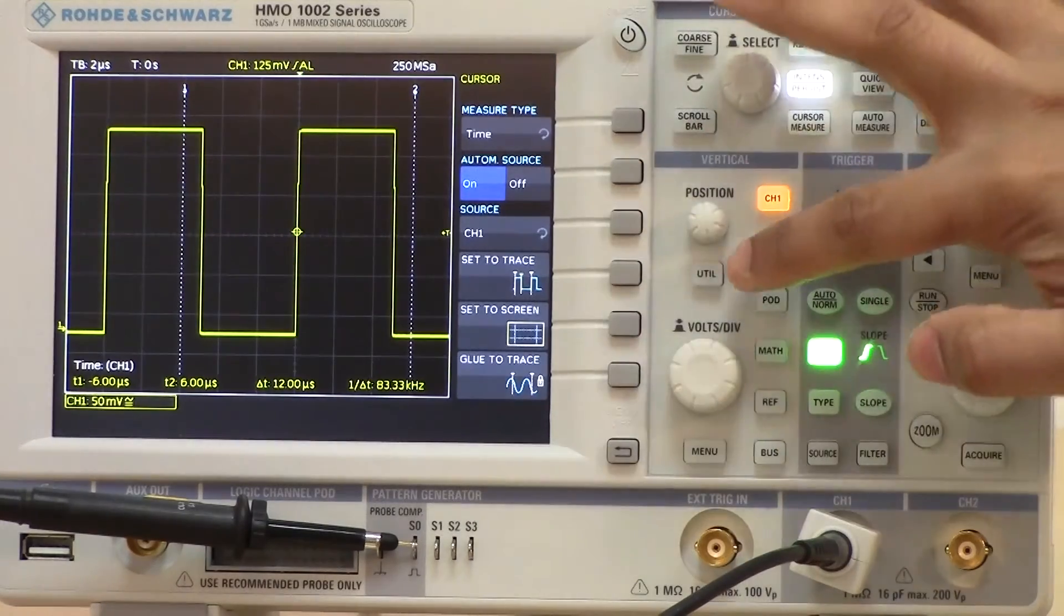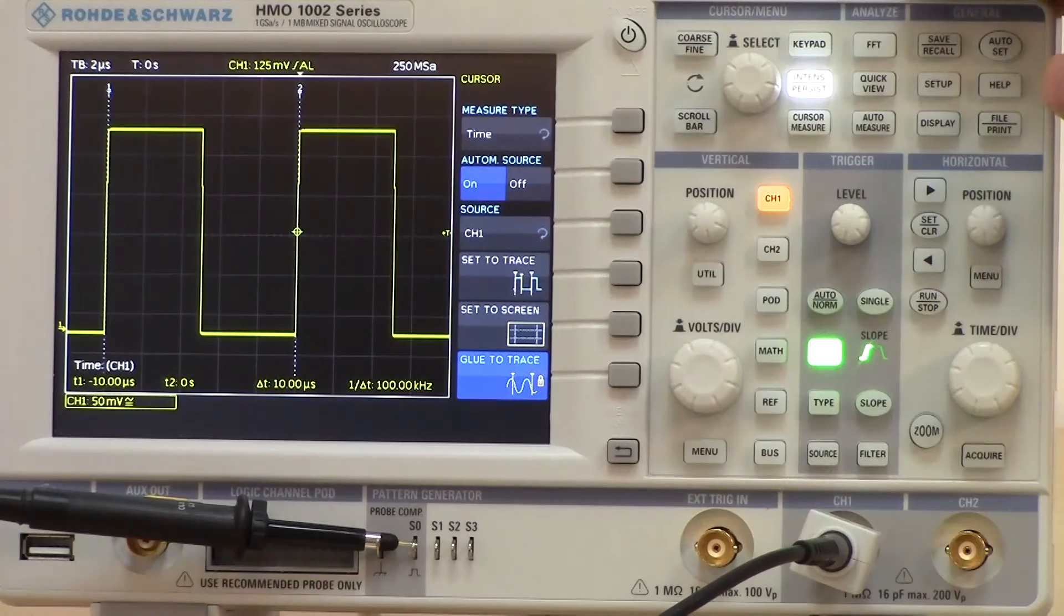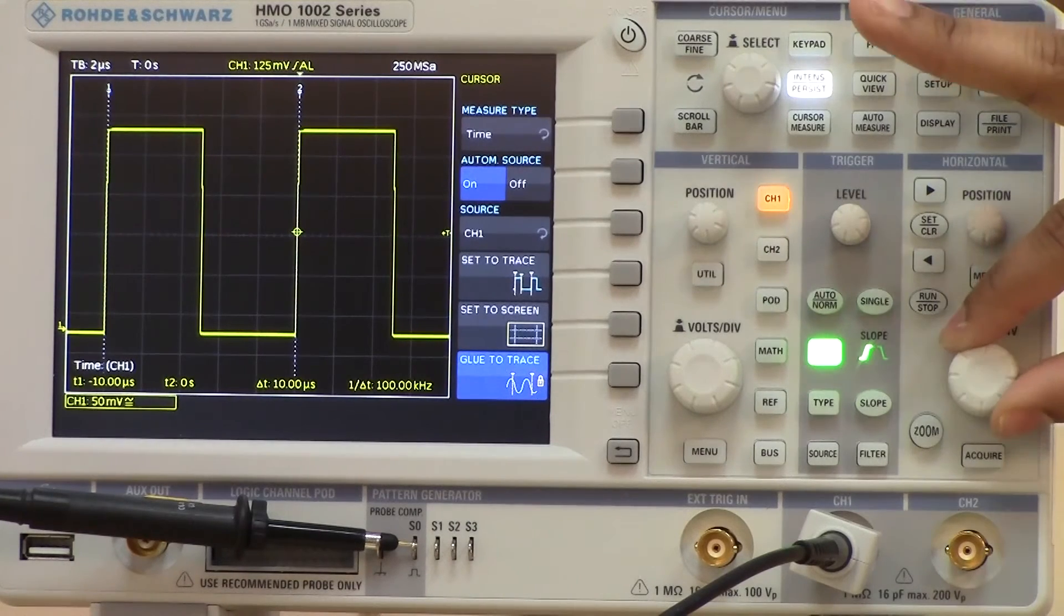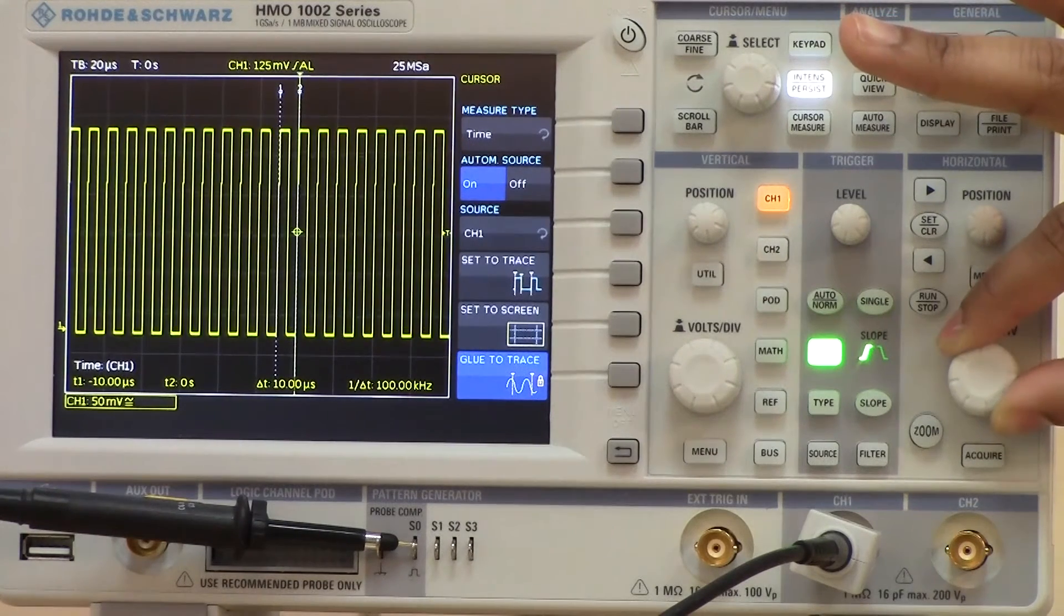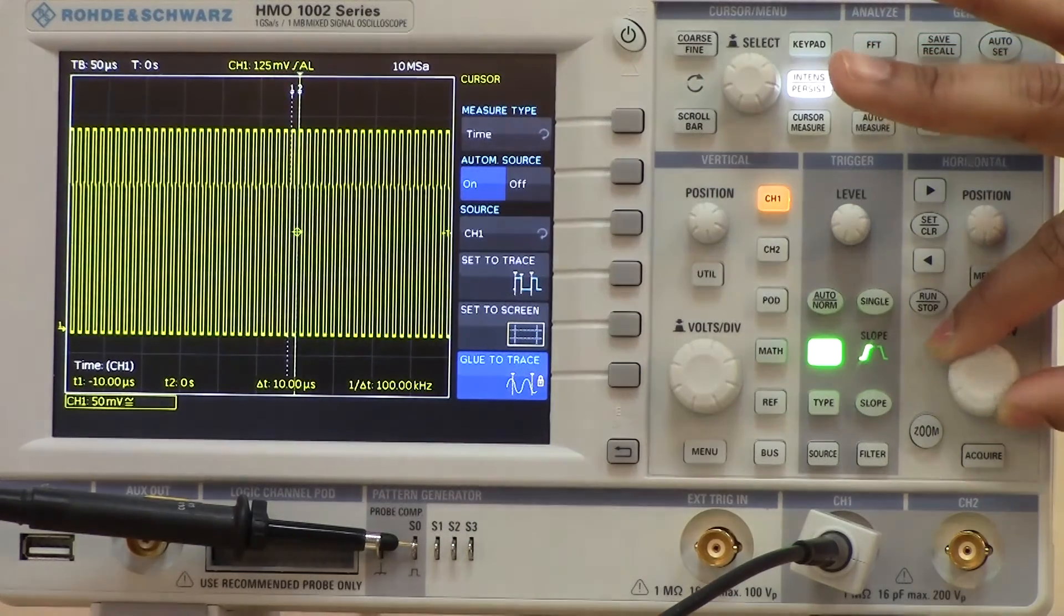Glue to trace is also quite nice. If I do set to trace and then do glue to trace, if I change my time base settings, you can see the cursors follow that setting change.